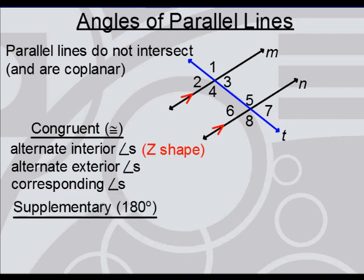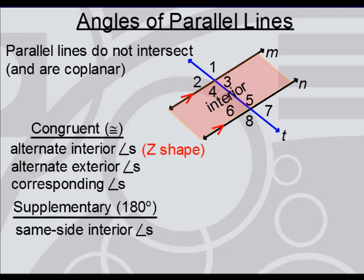The one pair of angles that are supplementary that come up oh so often are same-side interior angles. Just as the name suggests, we're talking about two angles that are in the interior, and they're on the same side. So, in this case, both on the left of the transversal, or both on the right of the transversal, but not one from each side, because that would be alternate.